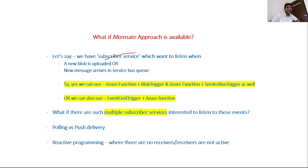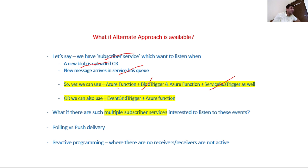Let's imagine we have a subscriber service that is interested to listen to events — for example, when a new blob is uploaded in a storage account, or when a new message arrives in a Service Bus queue. For this, we may have two solutions: an Azure Function blob trigger, or an Azure Function Service Bus trigger.